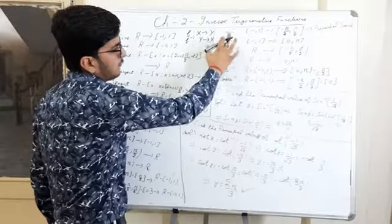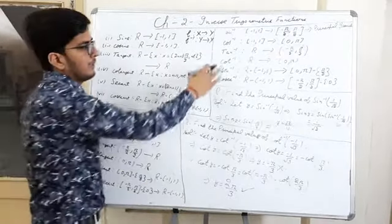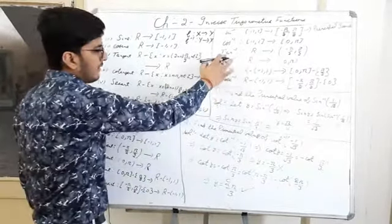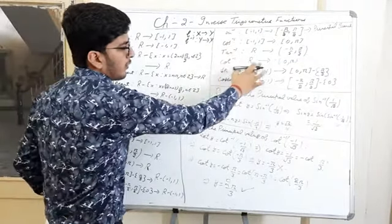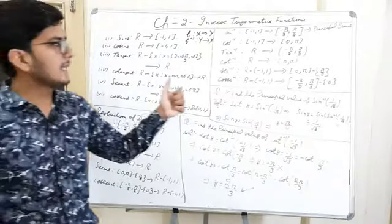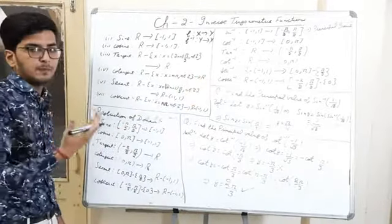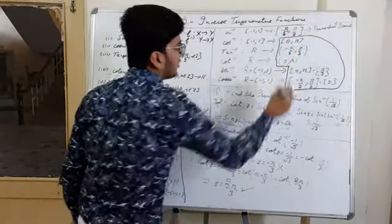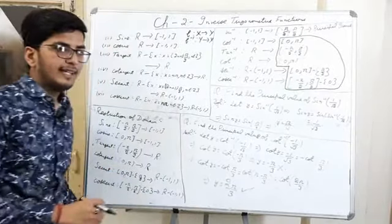So for the principal branch, sin⁻¹ is defined from [-1, 1] to [-π/2, π/2]. cos⁻¹ is defined from [-1, 1] to [0, π]. tan⁻¹ is defined from ℝ to the open interval (-π/2, π/2). cot⁻¹ is defined from ℝ to the open interval (0, π). Similarly for sec⁻¹ and csc⁻¹. These are all six inverse trigonometric functions with their principal branches.